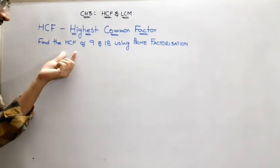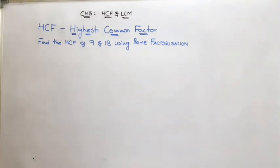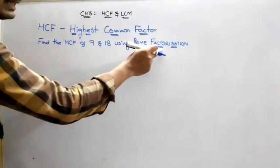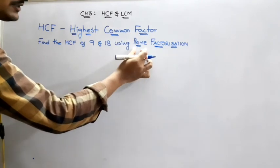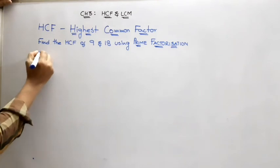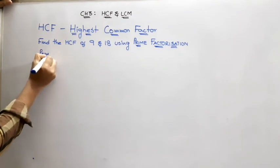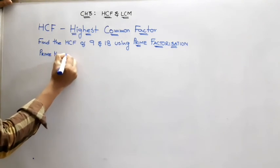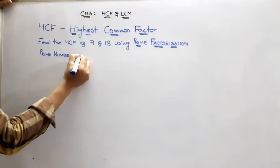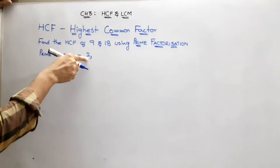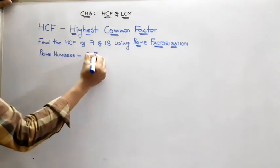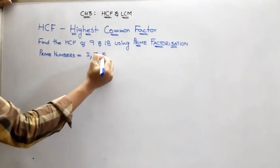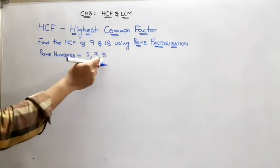Find the HCF of 9 and 18 using prime factorization. First we need to understand what prime factorization means. Factorization means finding factors. And prime means we make use of prime numbers — the numbers which are divisible by 1 and the number itself. For example, 2 is divisible by 1 and 2; 3 is divisible by 1 and 3; 5 is divisible by 1 and 5; 7 similarly.